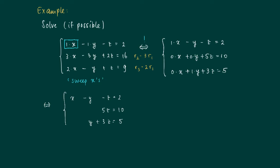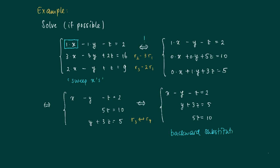This system closely resembles the first example, up to an interchange of rows. If we interchange row 3 and row 2, we get x minus y minus z equals 2, y plus 3z equals 5, and 5z equals 10. We can now apply backward substitution: z equals 2, y equals minus 1, and x equals 3. So we get a unique solution: x equals 3, y equals minus 1, z equals 2.